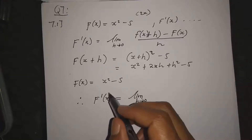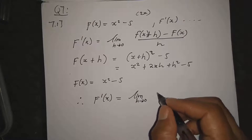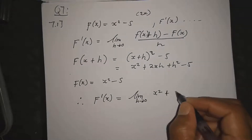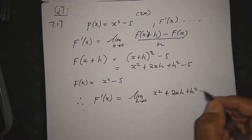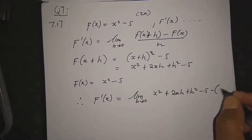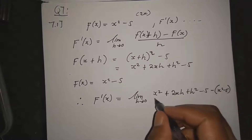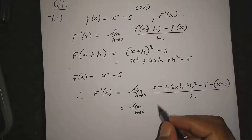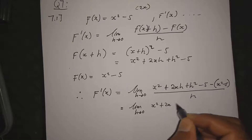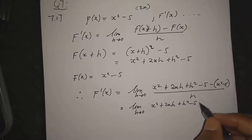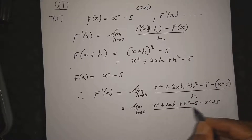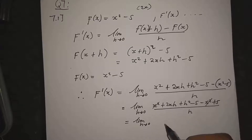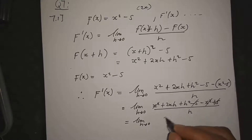Simplifying: f'(x) = lim h→0 of [2xh + h² - 5 - x² + 5] divided by h. The x² terms cancel and the fives cancel, leaving 2xh + h² all divided by h.